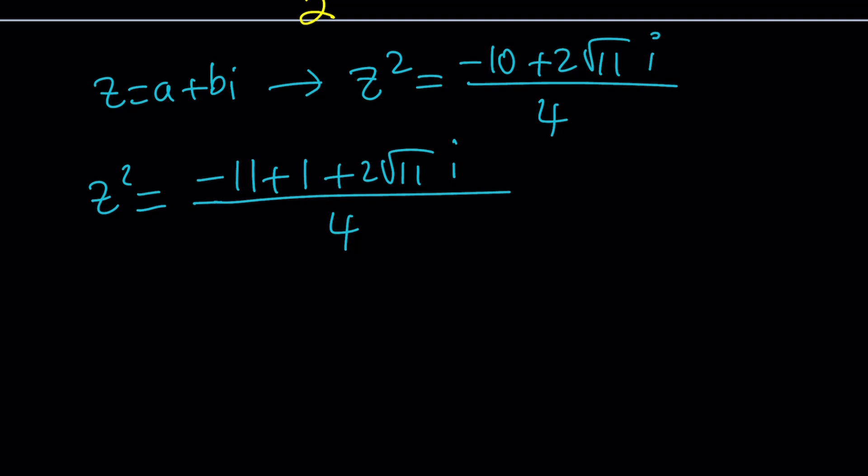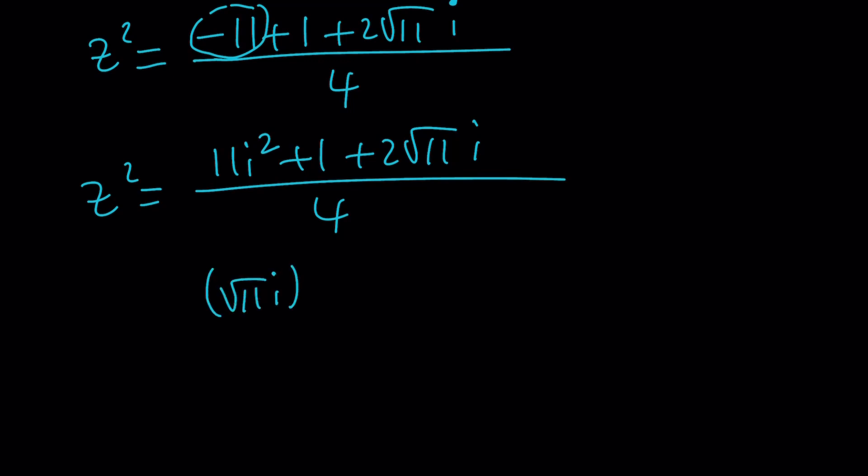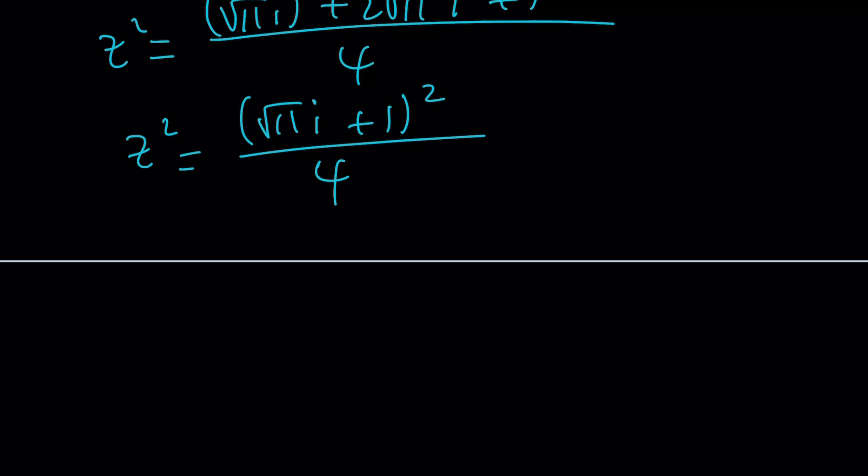I can basically write this as square root of 11 i squared plus two times square root of 11 i plus one divided by four. This is square root of 11 i plus one squared. z squared has two values. We're going to have to consider the plus minus sign. Here's the values we're going to get from here.